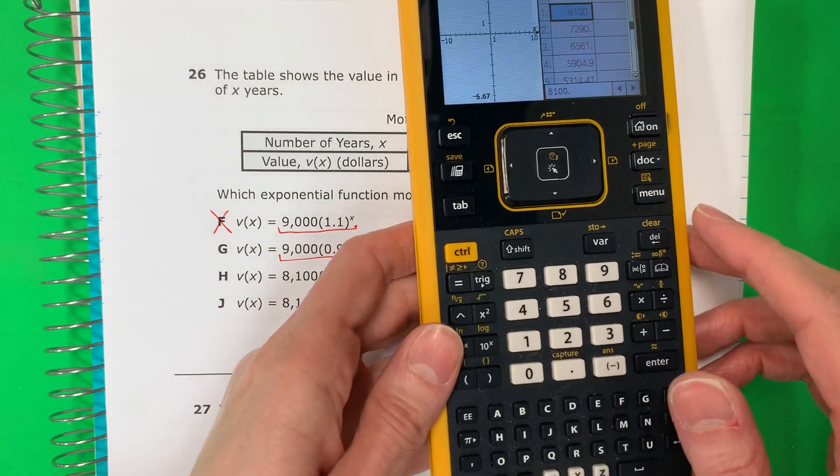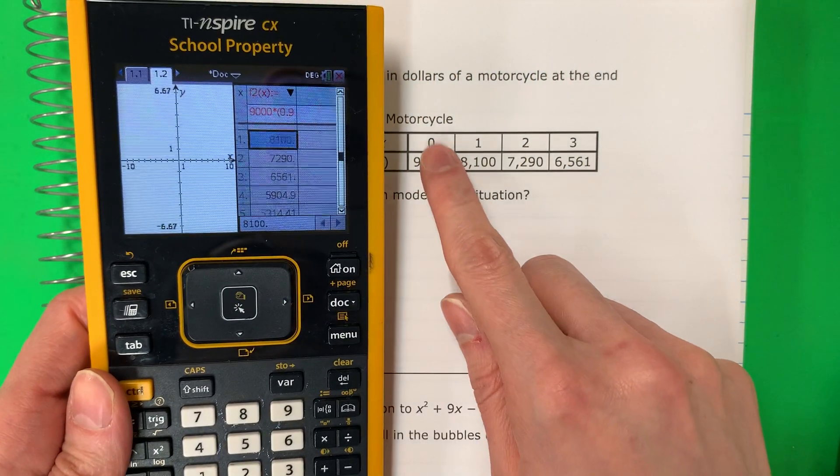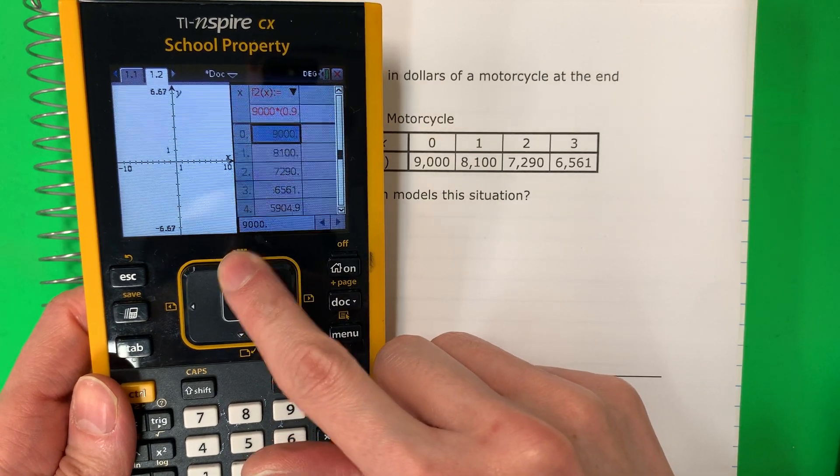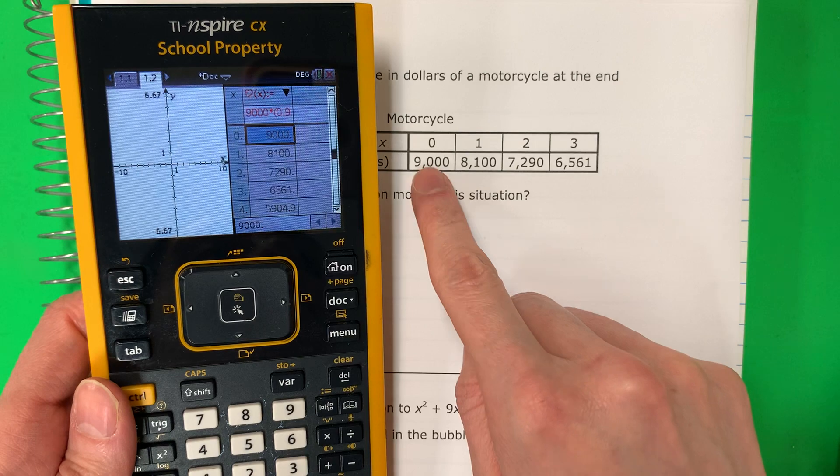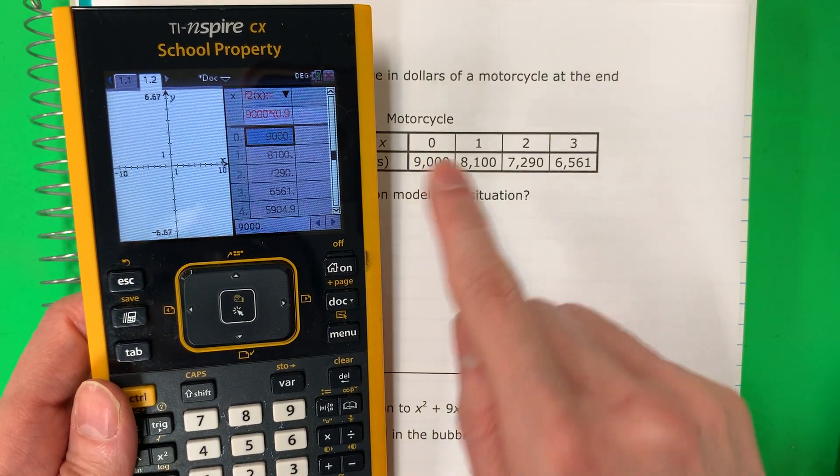All right. Let's go ahead and compare. So I need the zero. Necesito la cero. So go up. Arriba. Okay. Zero 9,000. This is good. Zero 9,000. Perfect. The same. Lo mismo. Now one.